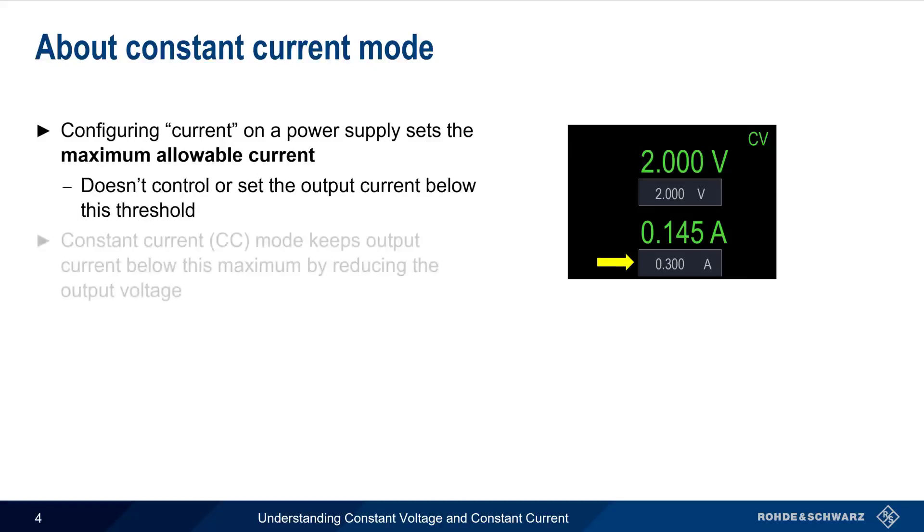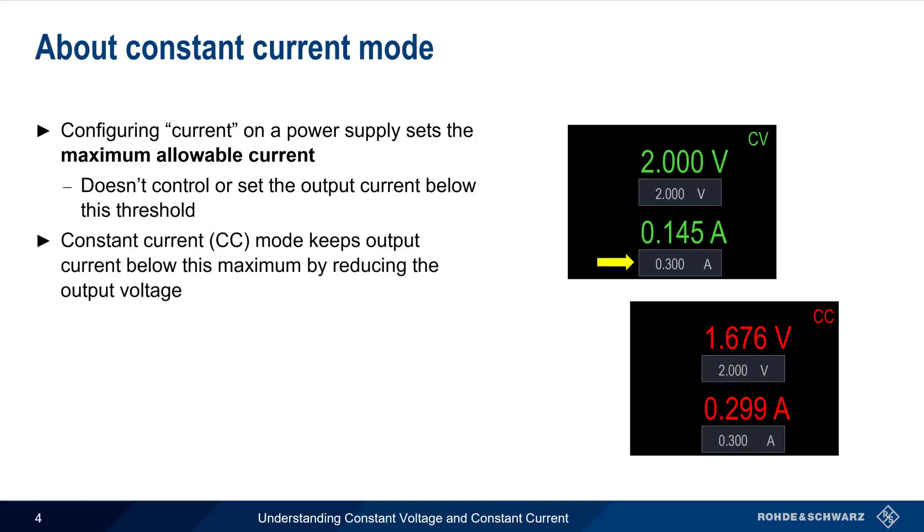As mentioned a moment ago, constant current mode keeps the output current below a maximum value by reducing the output voltage. We'll go through an example of this step-by-step in just a moment.